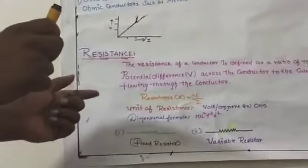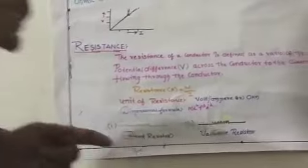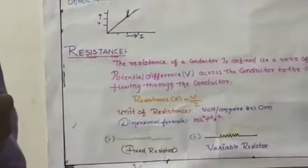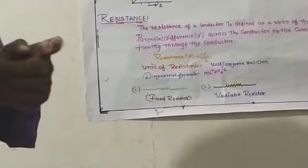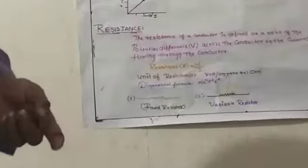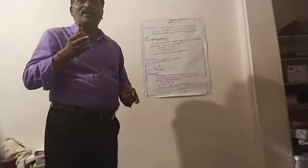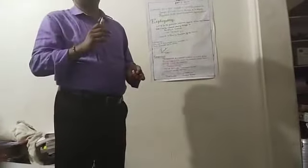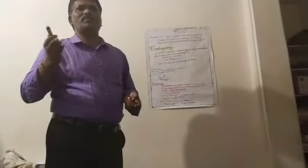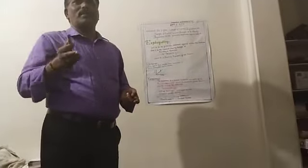Resistance depends upon some physical factors: it depends upon the length of the conductor, the area of the cross-section of the conductor, as well as the material or nature of the conductor. The resistance changes when the metal changes — the resistance of aluminum is different from copper, and the resistance of copper is different from silver.